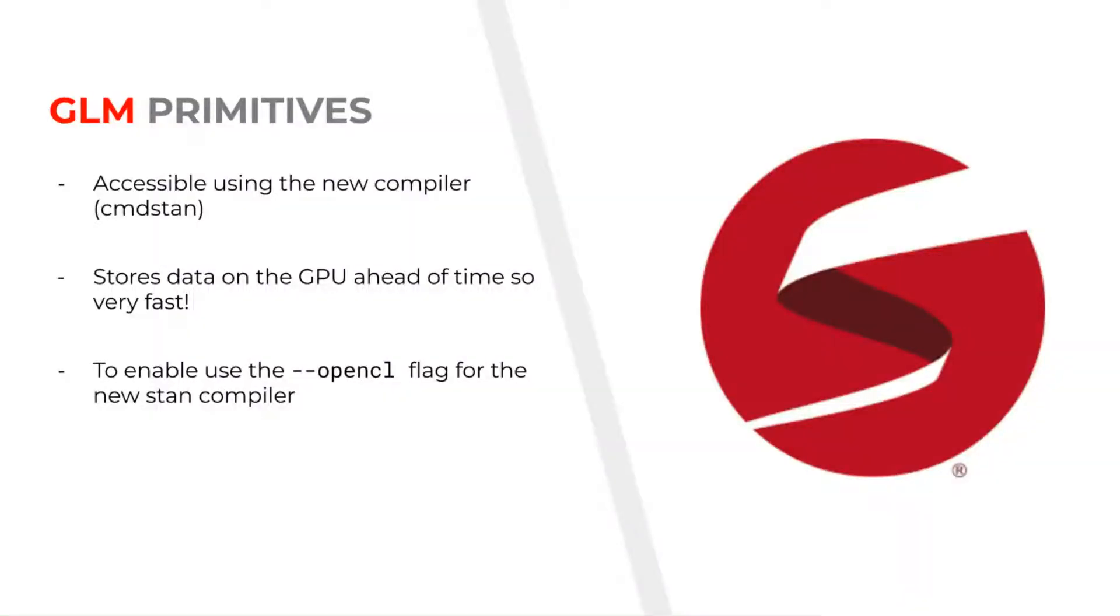Note that these new GLM functions for the GPU are only accessible when using the new compiler with command-stand, command-stand-r, or command-stand-py. Using the new compiler, it's easy to detect which arguments are data and which ones are variables. This allows STAN to move data over to the GPU once instead of each time the GLM function is called.